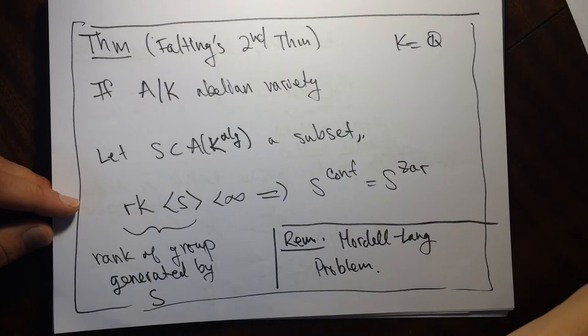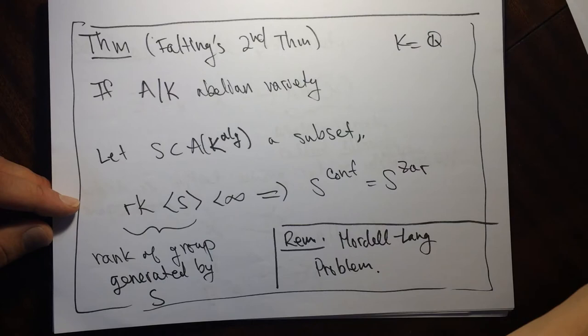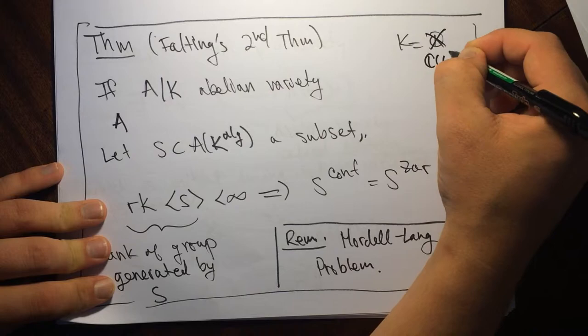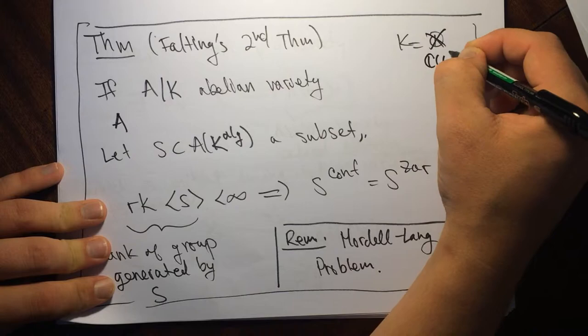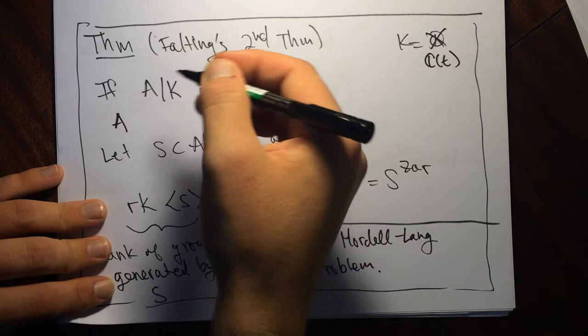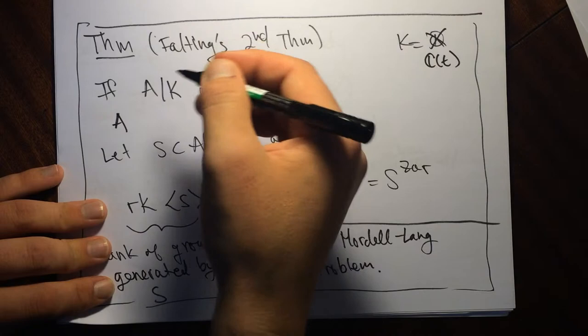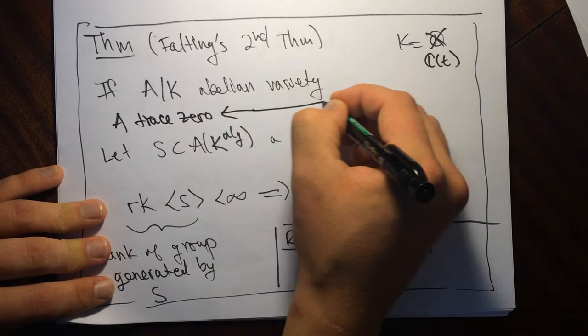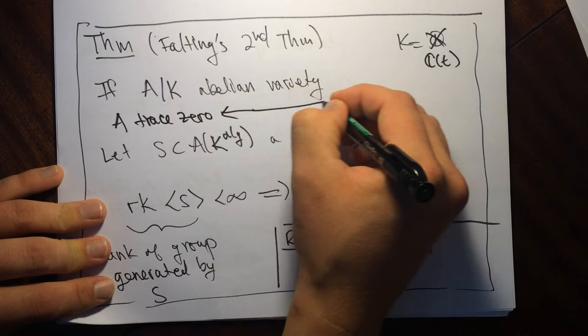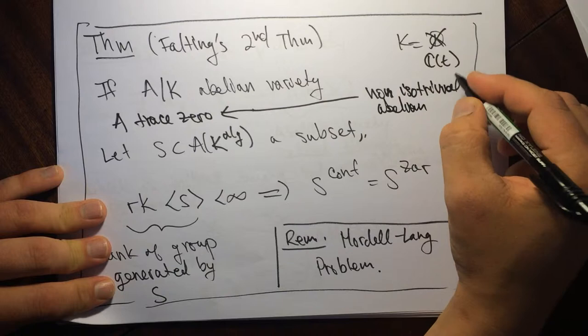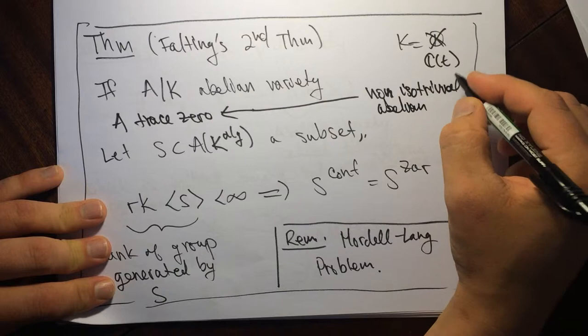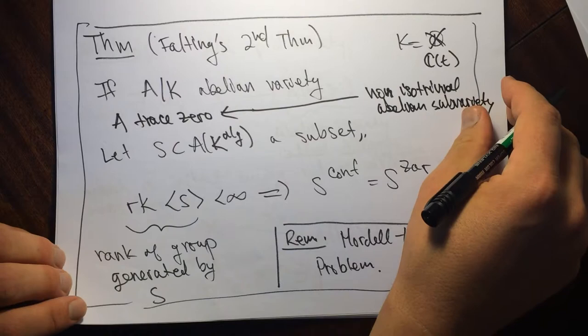We can do something similar for abelian varieties, but now we need a different condition. K can be C(T), and A must have trace zero. This is due to different people — the proof involves Manin maps. The extra condition is that A needs to be trace zero, which means it has no non-trivial isotrivial abelian subvarieties — closed subvarieties which are abelian group schemes.